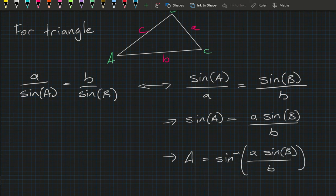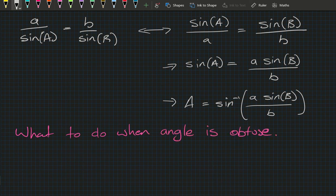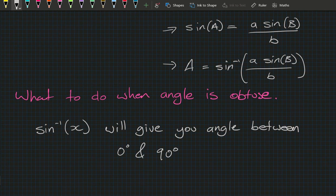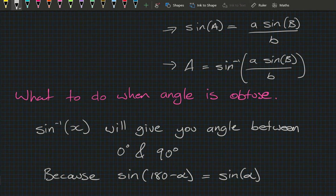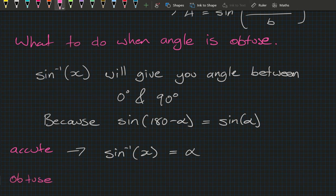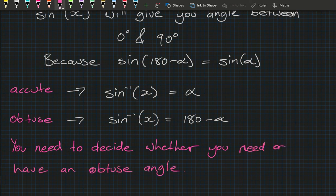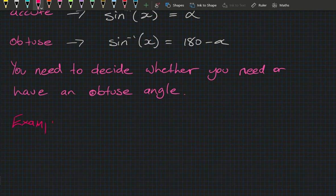The other key fact from the introduction: when you take inverse sine of some value x, it gives an angle between 0 and 90 degrees. But since sine of (180 minus alpha) equals sine of alpha, if the angle is acute we say inverse sine of x equals alpha, and if it's obtuse we say inverse sine of x equals 180 minus alpha. You'll need to use your judgment to decide.